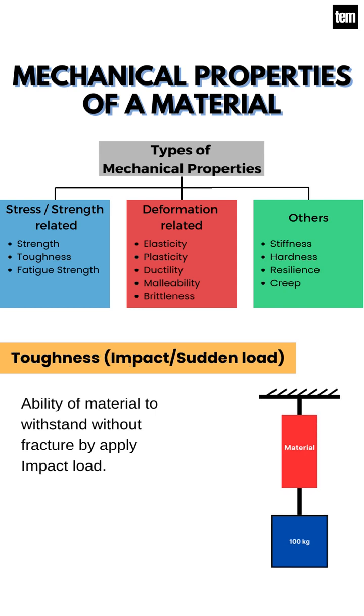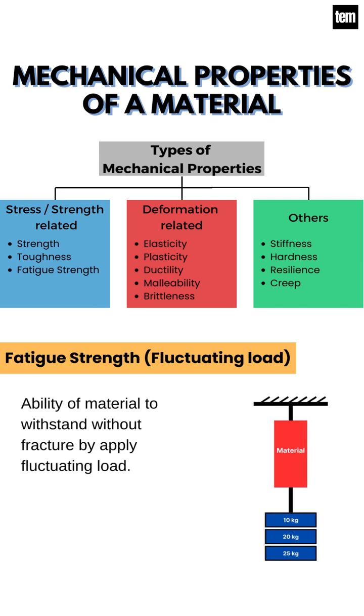Toughness: ability of a material to withstand without fracture by applying impact load. Fatigue strength: ability of a material to withstand without fracture by applying fluctuating load.